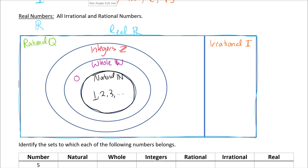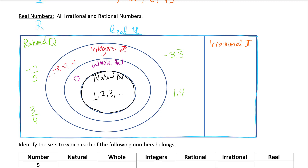The integers that aren't already in the whole or natural categories are the negatives: negative three, negative two, negative one, and so on. Negative one, for example, is an integer, a rational, and a real. The rational rectangle also includes things like decimals that repeat, decimals that stop, and fractions like three-fourths or negative eleven-fifths — things that aren't integers, wholes, or naturals.